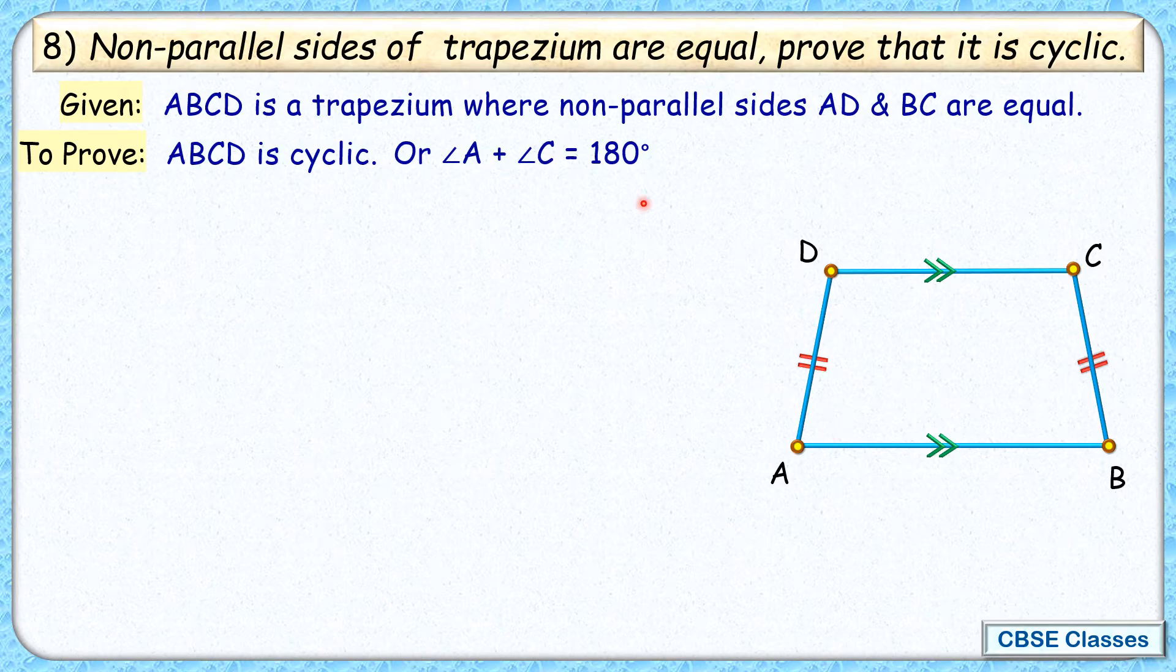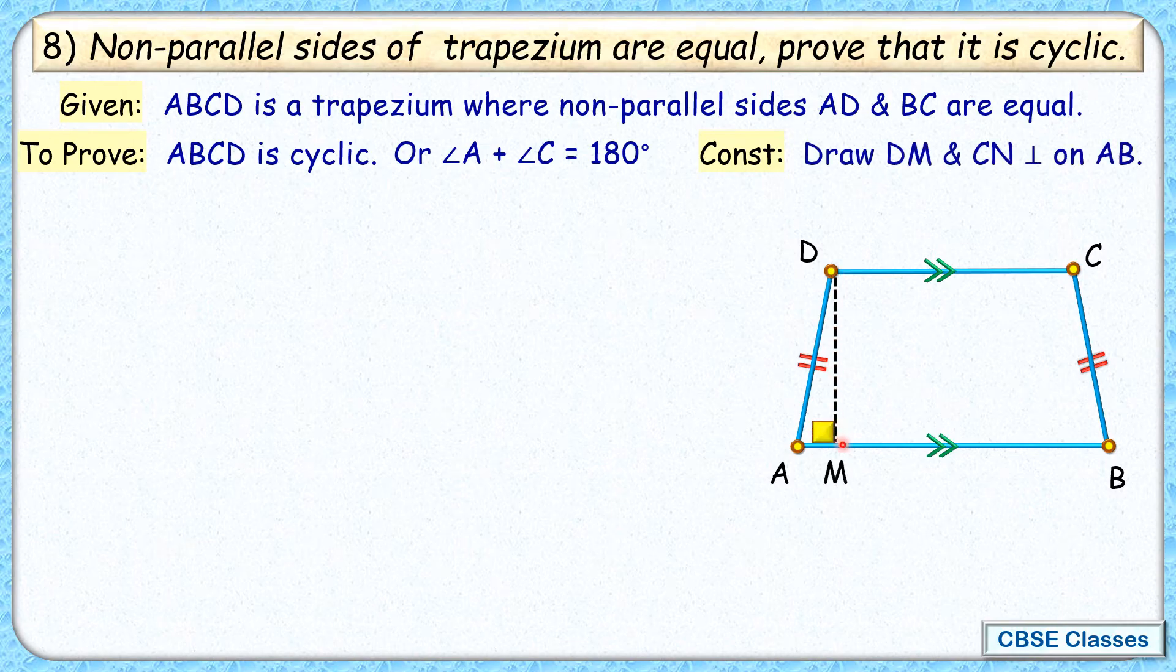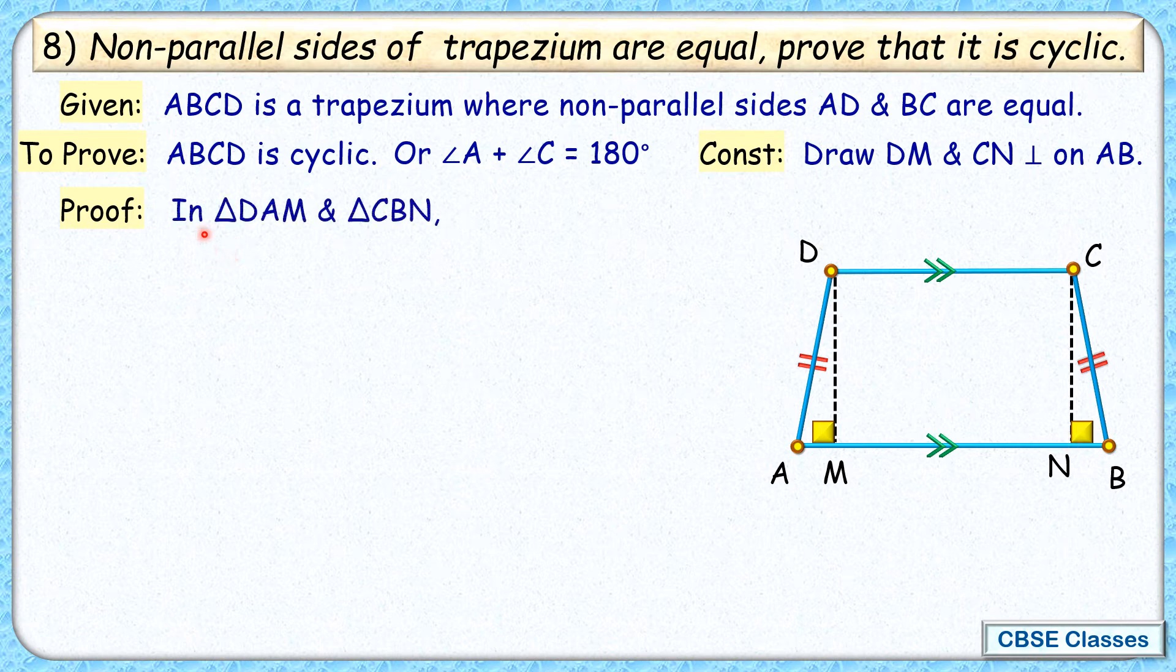So to prove this, we have to do some construction. From point D we'll draw a perpendicular on AB, and from point C we'll draw a perpendicular on AB. Now let's check the proof. For that, we'll consider triangle DAM and triangle CBN.